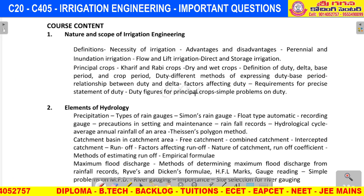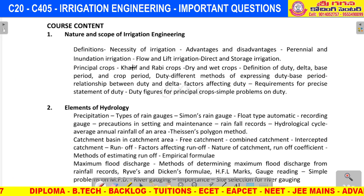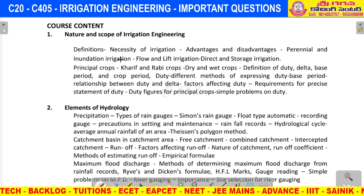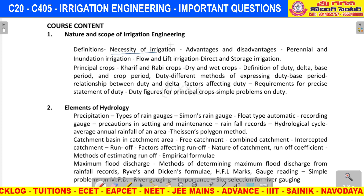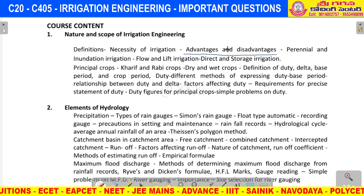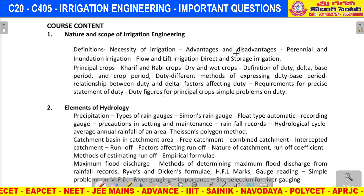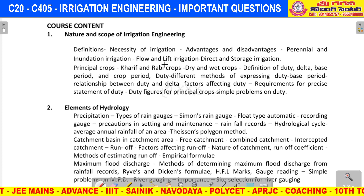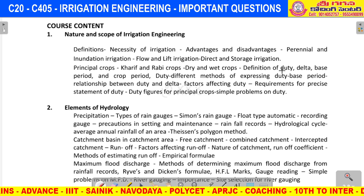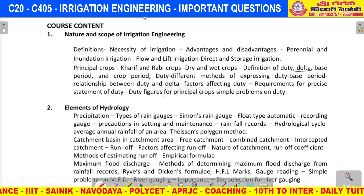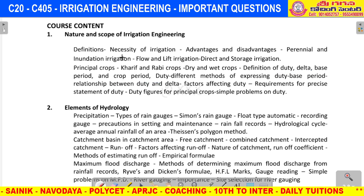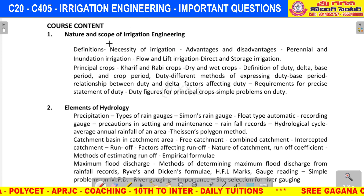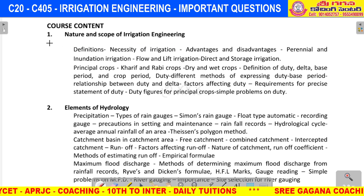For the first unit, the three-mark questions cover important definitions: what is irrigation, necessity of irrigation, right three advantages and/or right three disadvantages of irrigation. What is meant by duty, delta, base period, and crop period. For nature and scope of irrigation engineering, we have short answer questions covering 5 topics.